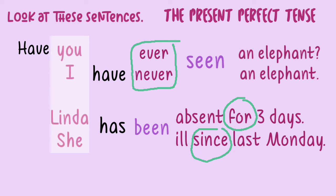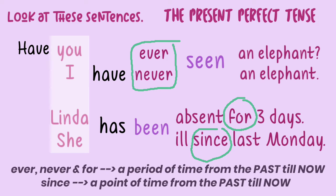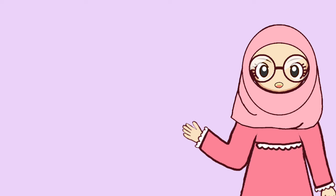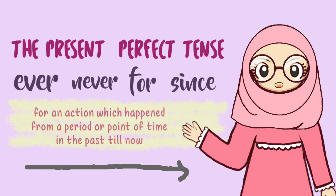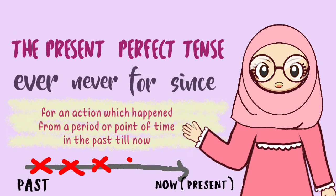Look at these sentences — they are also in the present perfect tense, used with the words ever, never, for, and since. These words show a period of time from the past till now. We use the present perfect tense with ever, never, for, and since for an action which happened from a period or point of time in the past till now.